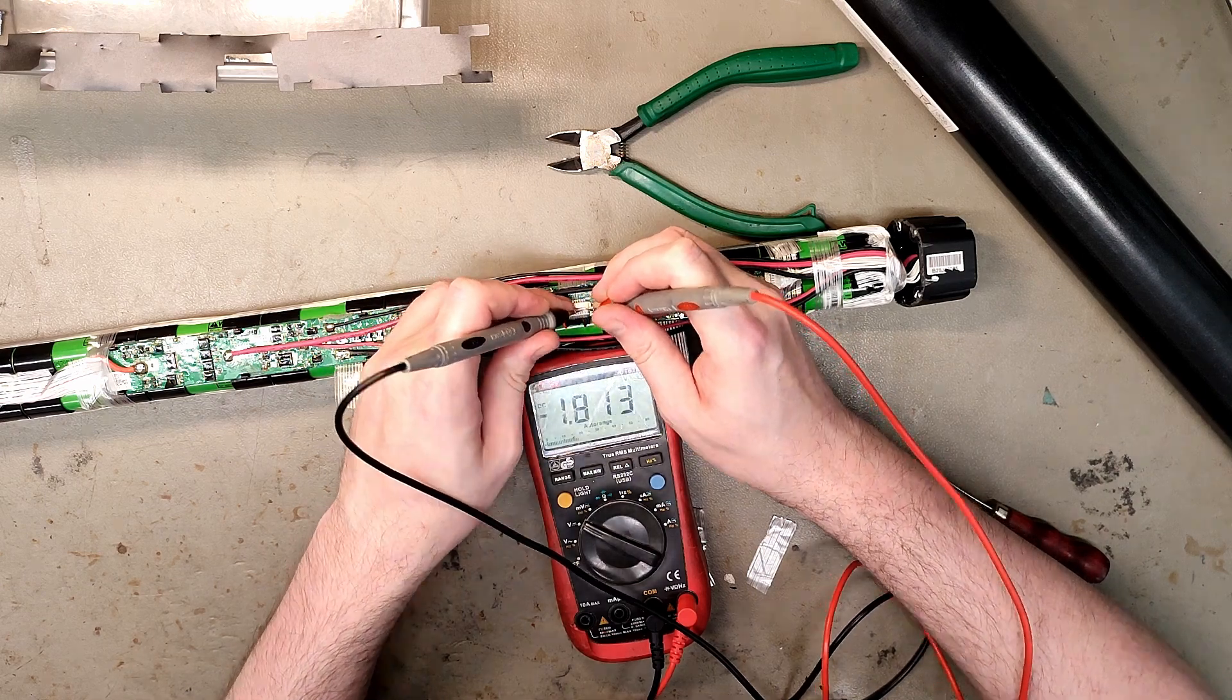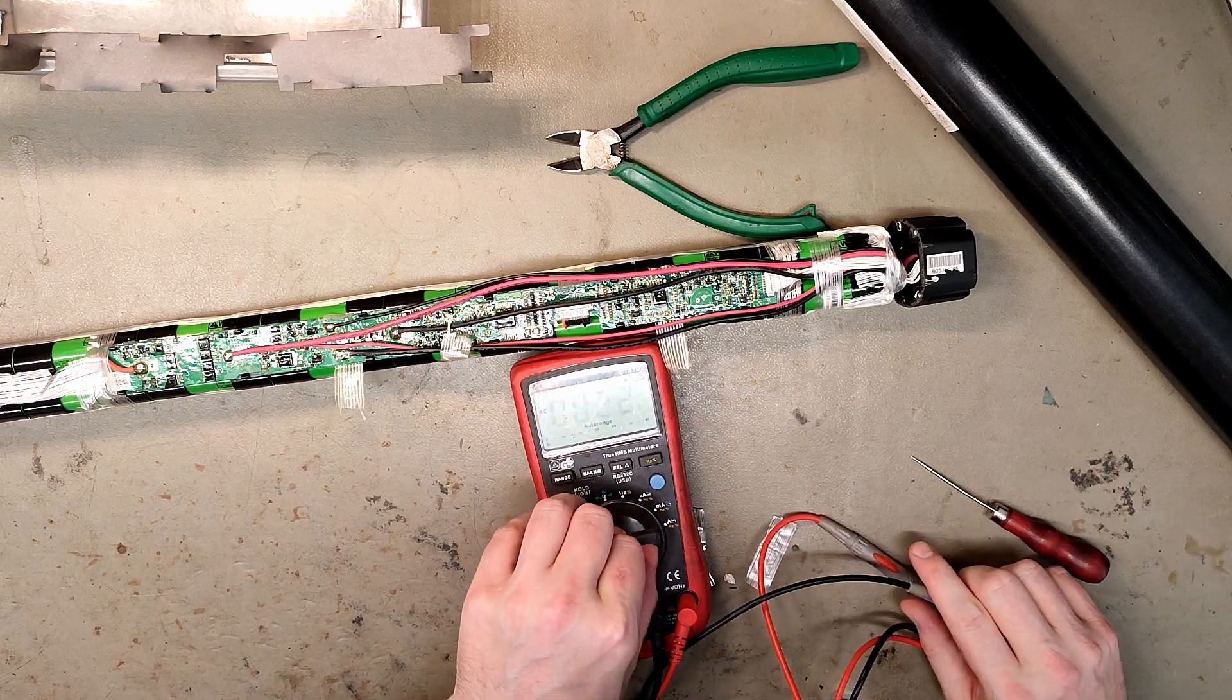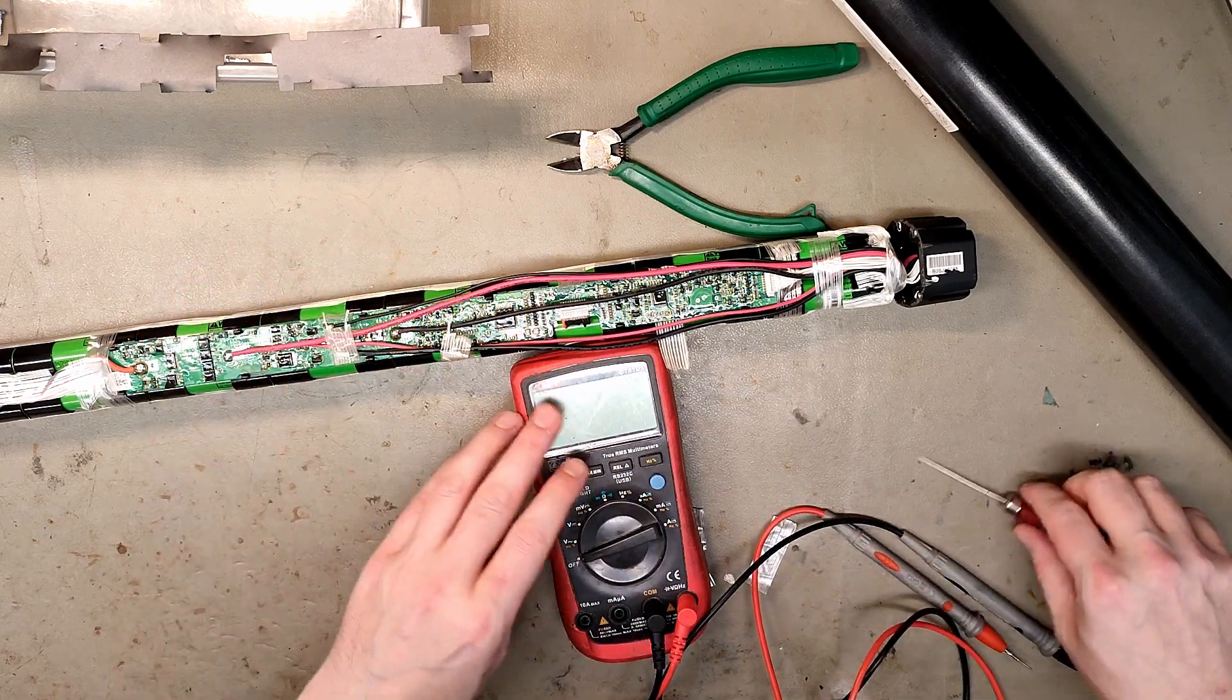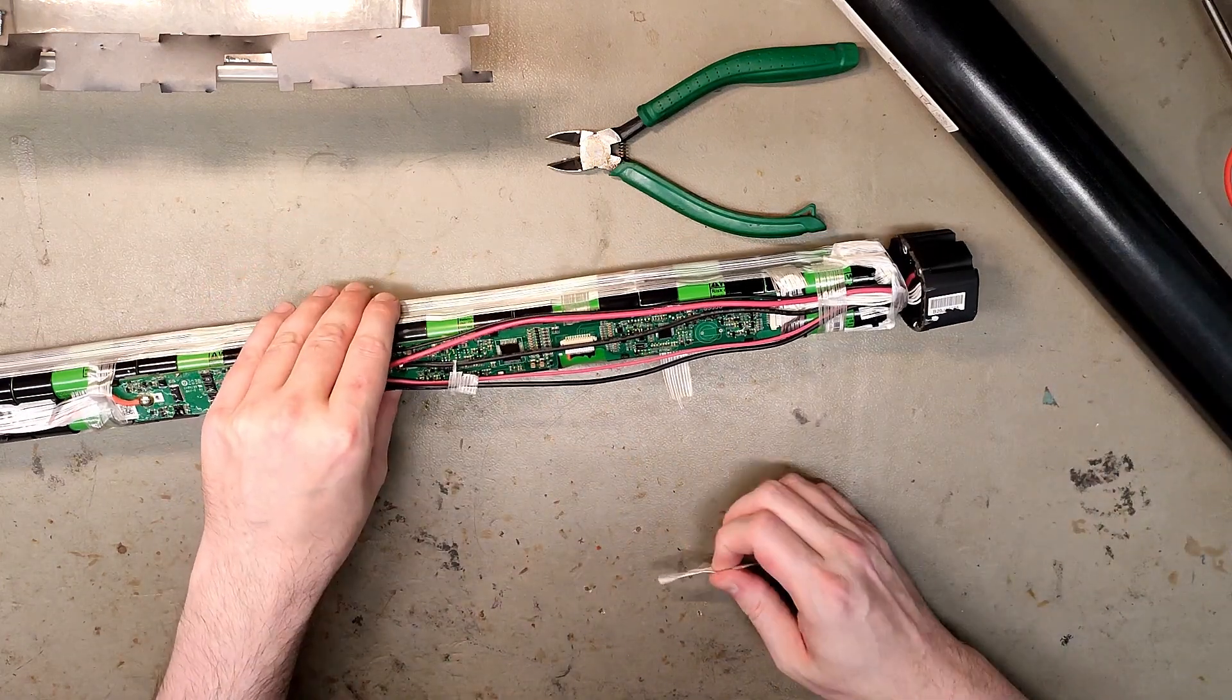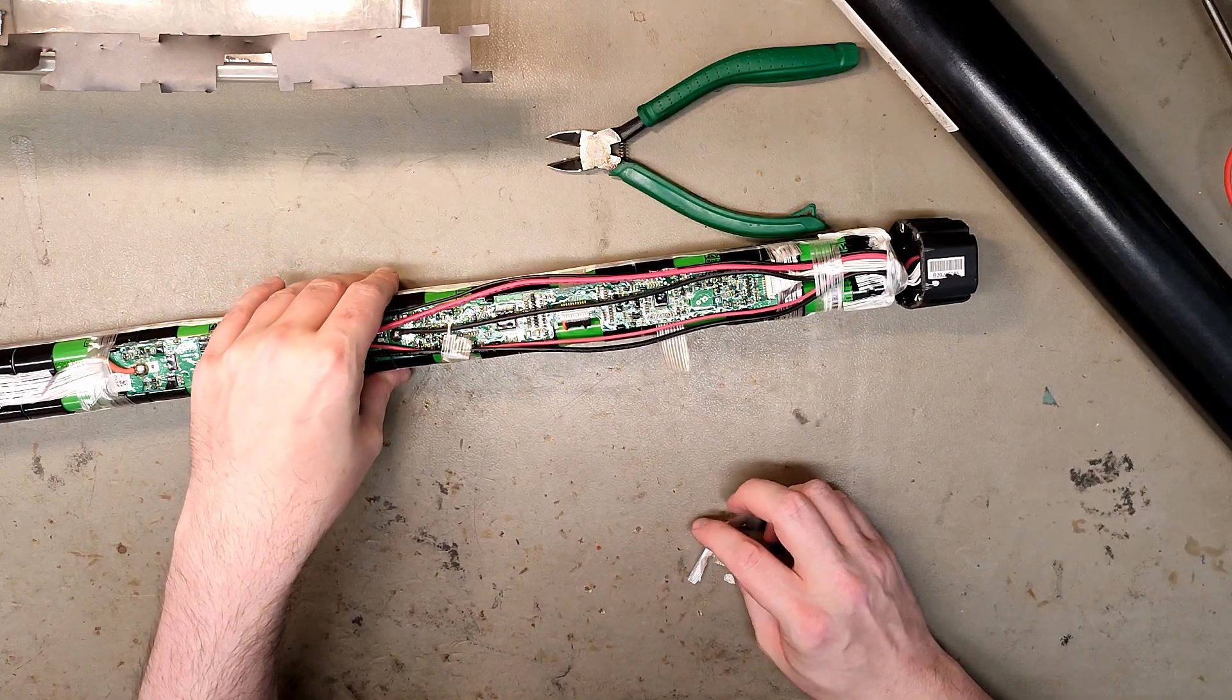Let's see if the cells are unbalanced. 1.7, 1.8, 1.8, 1.8, 1.8, 1.8, it's actually pretty balanced. 1.7, 1.8, so we can actually balance up this. I usually don't balance up when they're less than two volts, but since they're right under two volts I think this is actually quite doable.